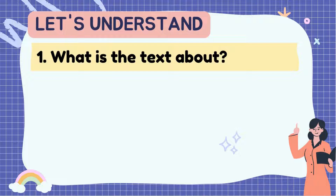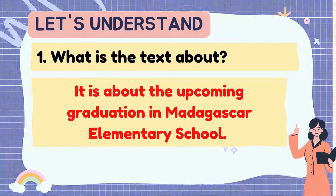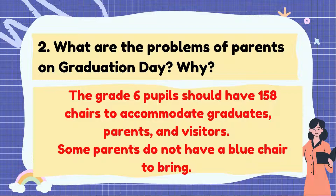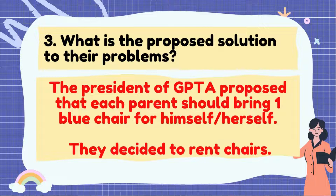Let's understand. What is the text about? It is about the upcoming graduation in Madagascar Elementary School. What are the problems of parents on graduation day? The grade 6 pupils should have 158 chairs to accommodate graduates, parents and visitors. Some parents don't have a blue chair to bring. What is the proposed solution to their problems? The president of GPTA proposed that each parent should bring one blue chair for himself or herself. They decided to rent chairs.